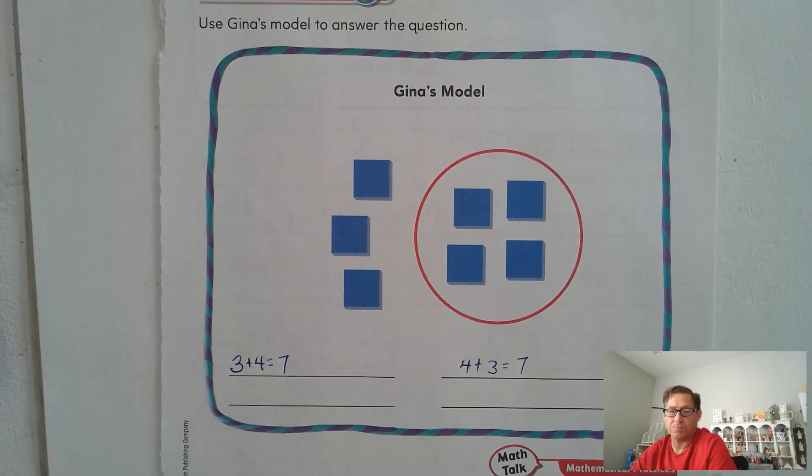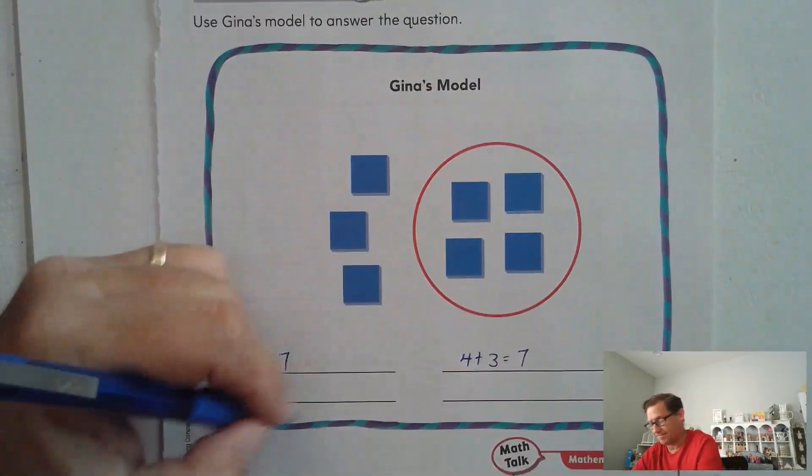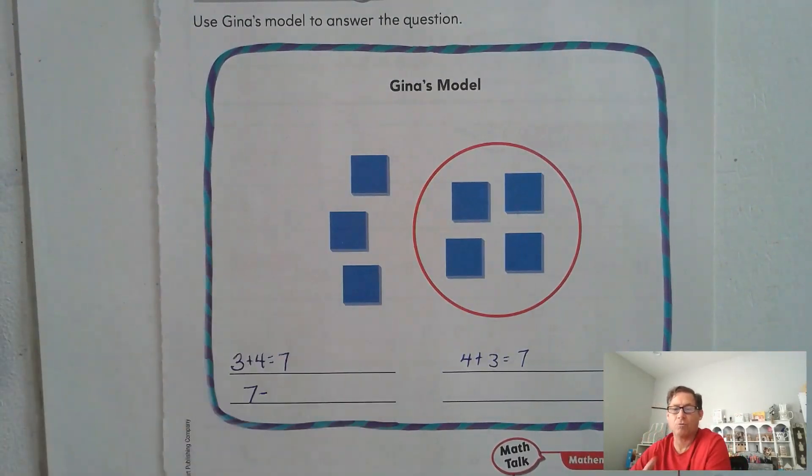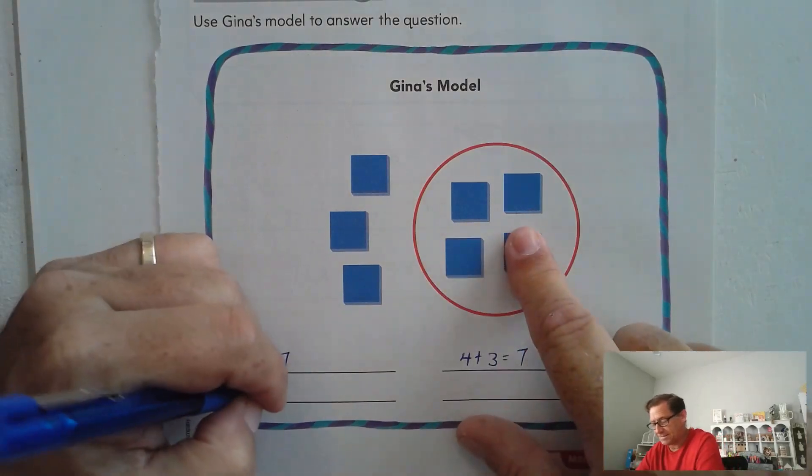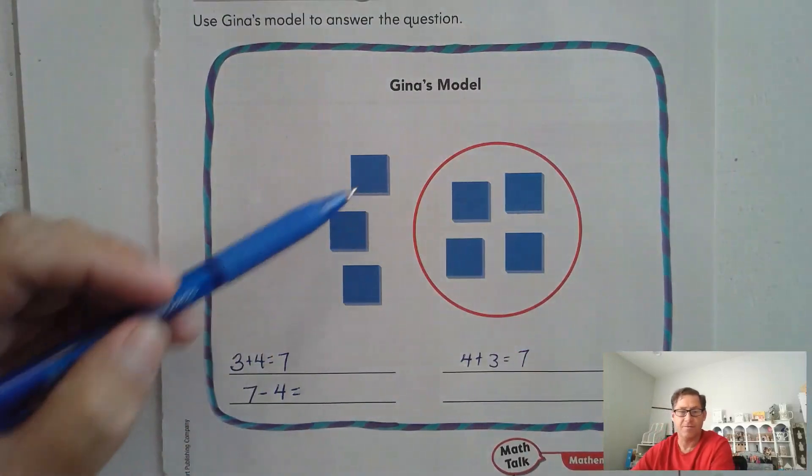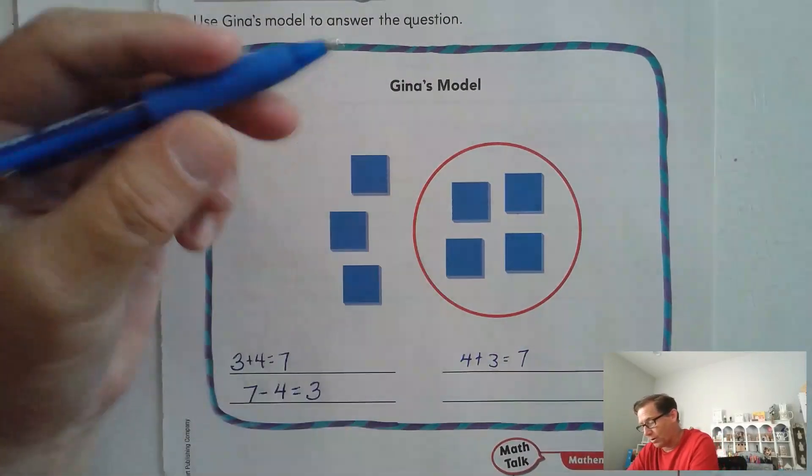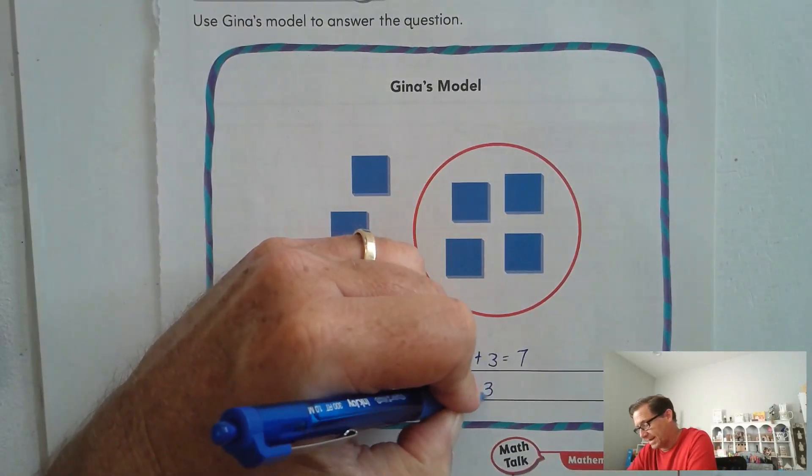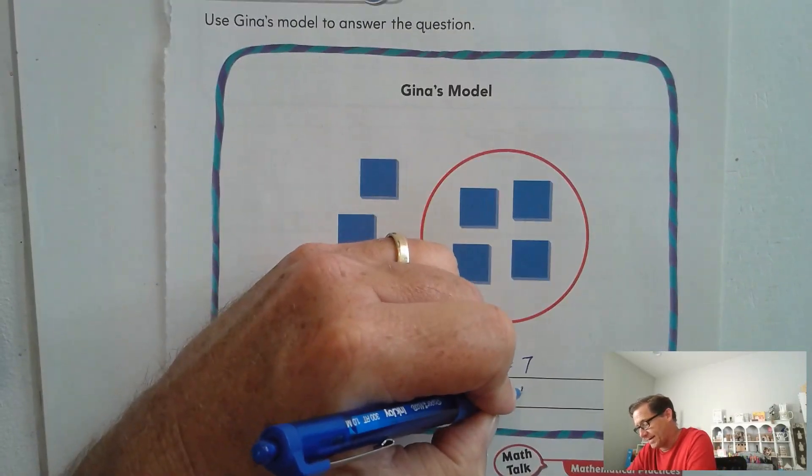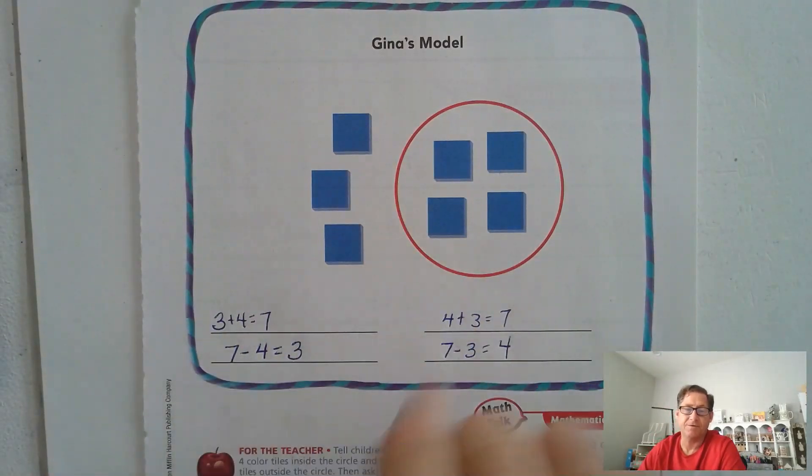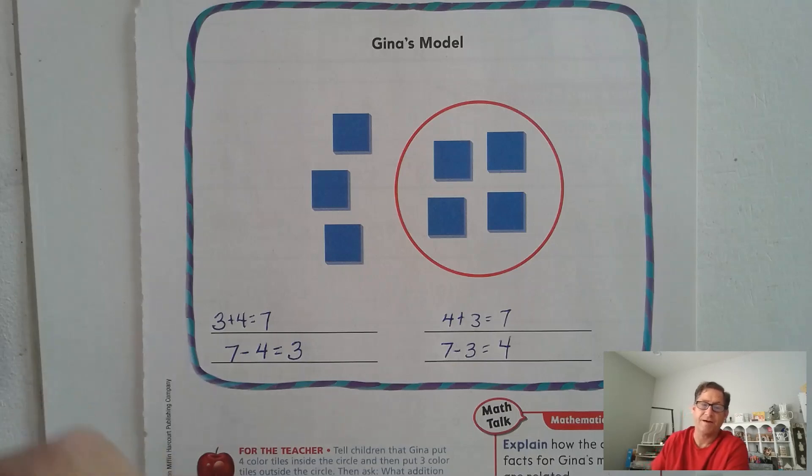What subtraction problem could be related to this? Well, we know she has seven tiles, right? If we said how many tiles are on the outside of the circle, we could take 7 minus the 4 and that would give us 3. Or we could say 7 minus 3 equals 4. So remember, these are related facts to 4 plus 3 and 3 plus 4.